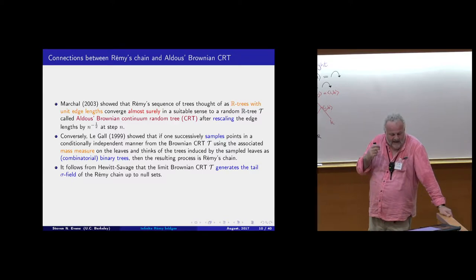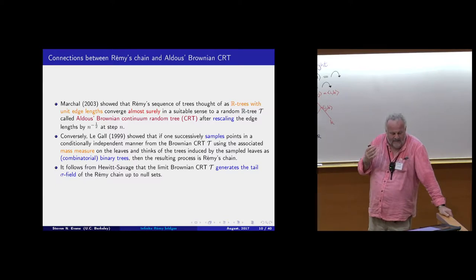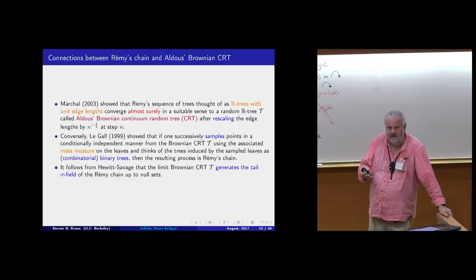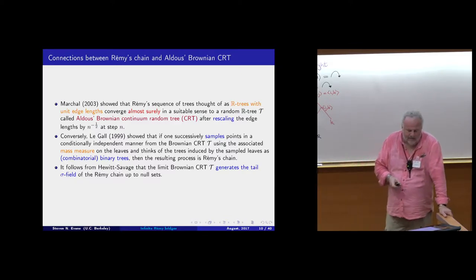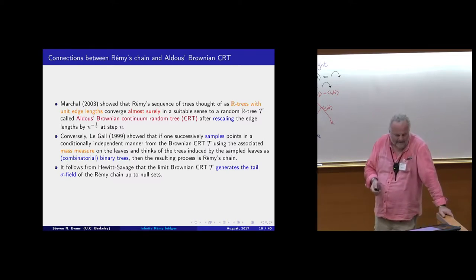What this tells you, via the Hewitt-Savage law, is that the limit — the Brownian Continuum Random Tree — generates the tail sigma-field of the Rémy chain up to null sets. In particular, the tail sigma-field of Rémy's chain is non-trivial; it's got this very rich random object living there.